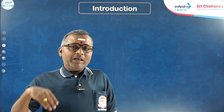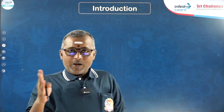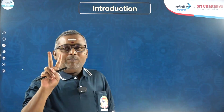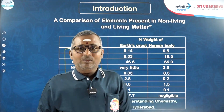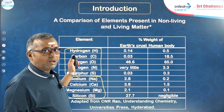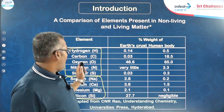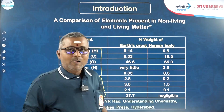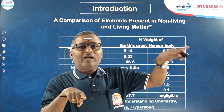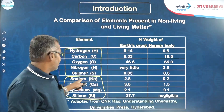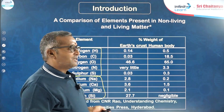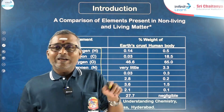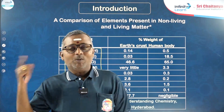So, when compared to the earth crust, in any living organism the two elements that are absolutely high are carbon and hydrogen. Whereas hydrogen, carbon, oxygen, nitrogen, and sulfur are more in human body than earth crust. Whereas sodium, calcium, magnesium, and silicon are more in earth crust when compared to the human body.